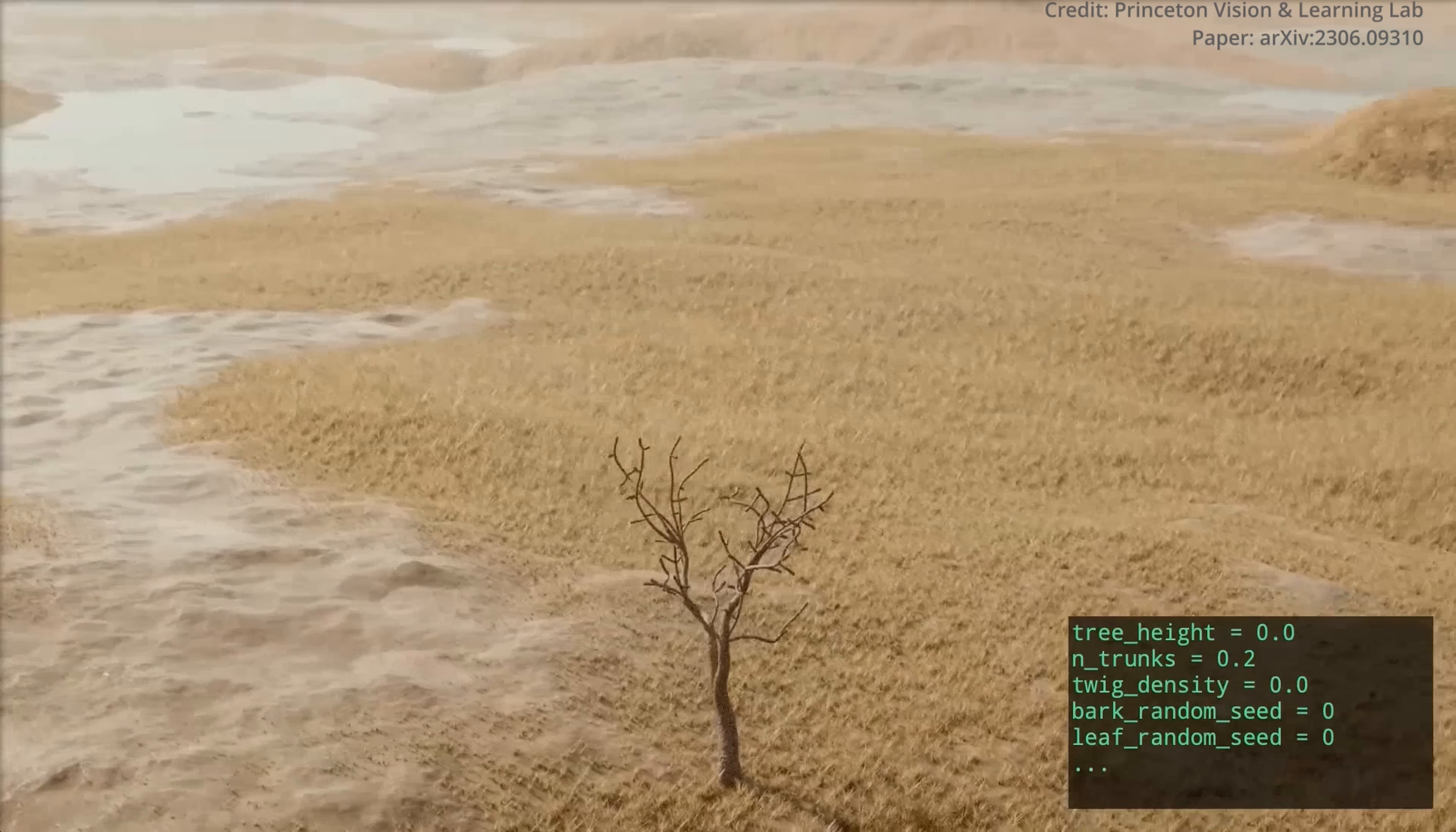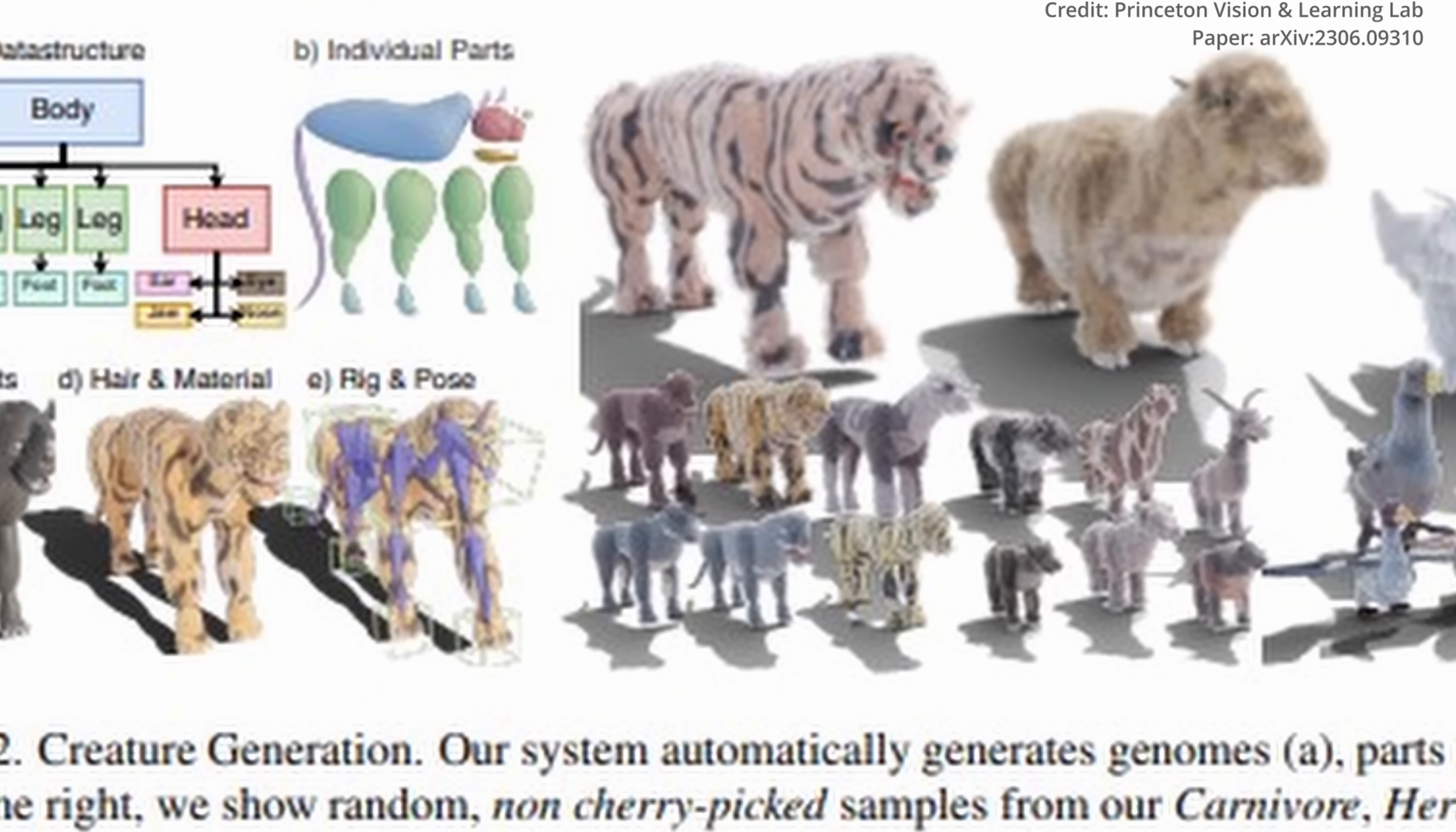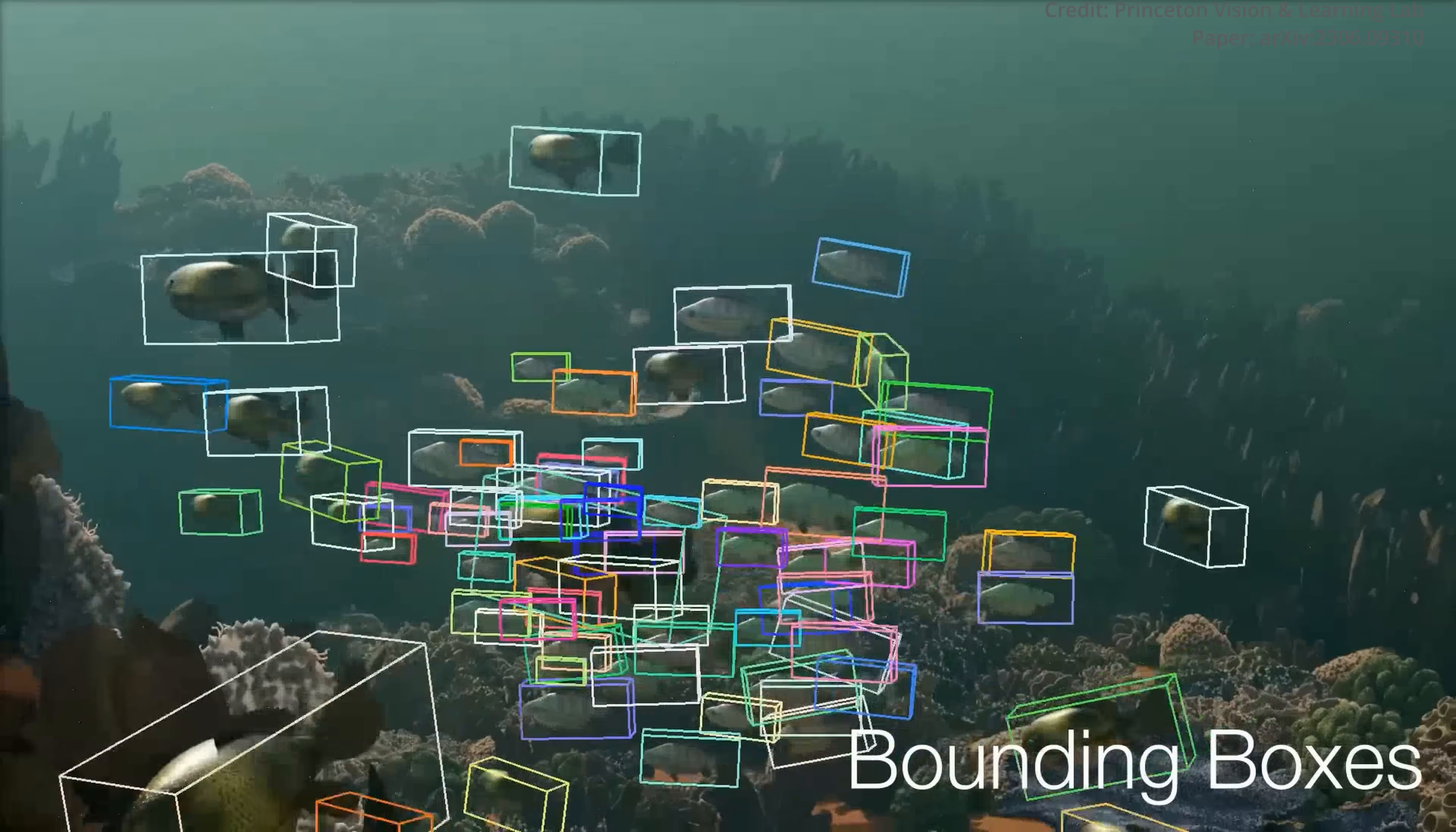Beyond its Blender-based architecture, Infinigen shines in its innovative approach to procedural rule creation. In an impressive effort to streamline the creation of procedural rules, the team developed utilities that transform Blender node graphs into Python code. Additionally, utilities have been created to render synthetic images with ground truth labels, thereby providing essential information such as depth, occlusion boundaries, bounding boxes, optical flow, surface normals, object categories, and instance segmentation.